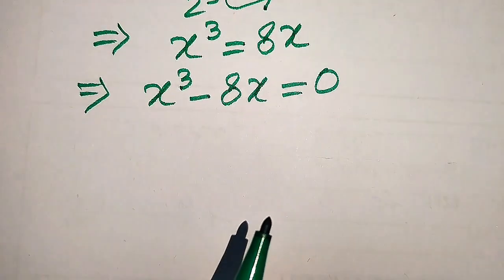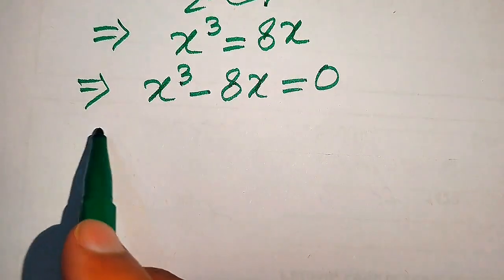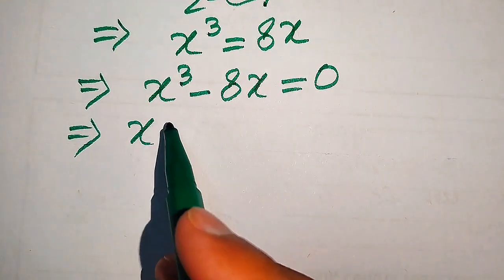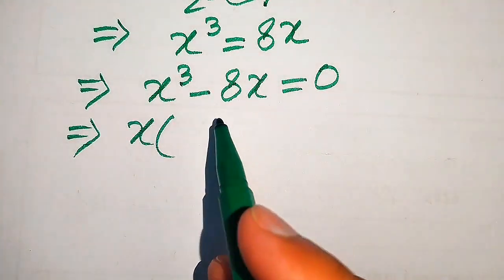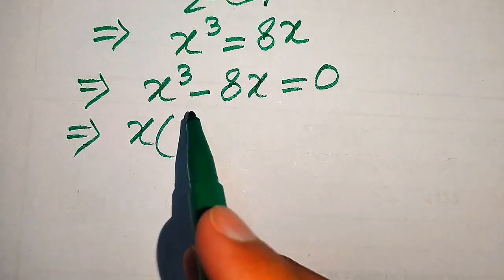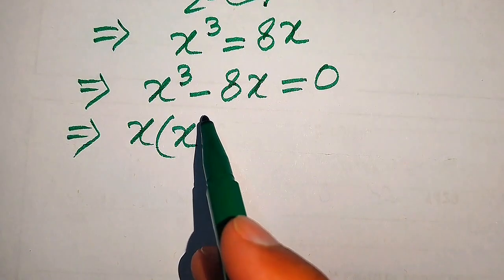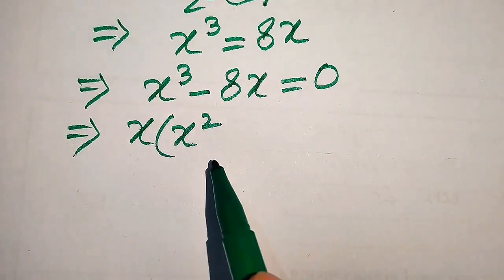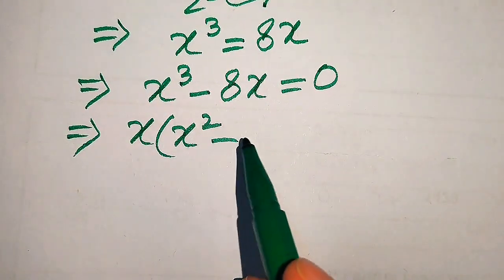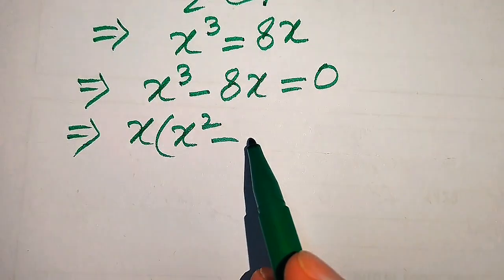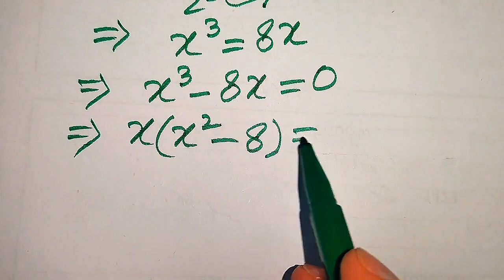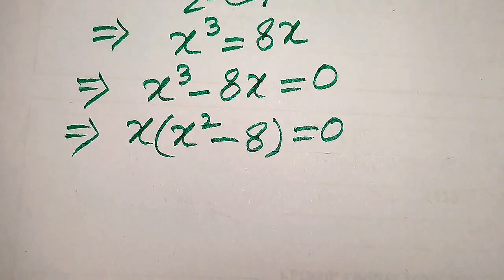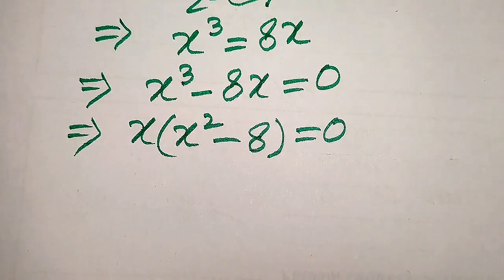You see here both terms involve x. We take common x from here and get the remaining values: x times the quantity x squared minus 8 equals 0.